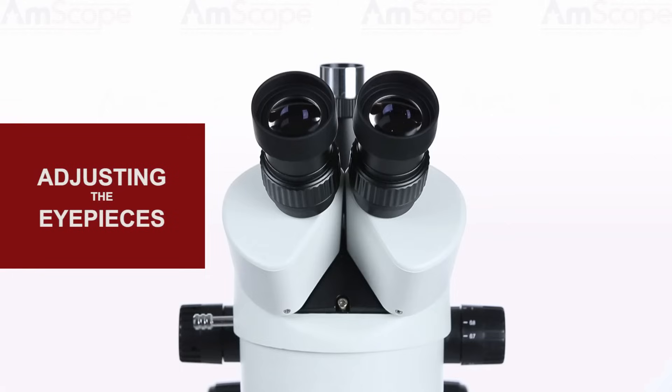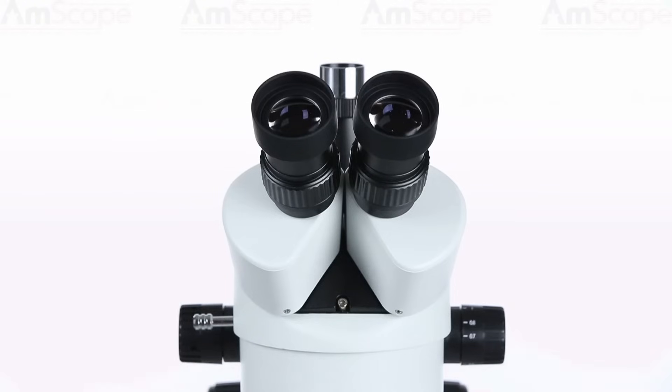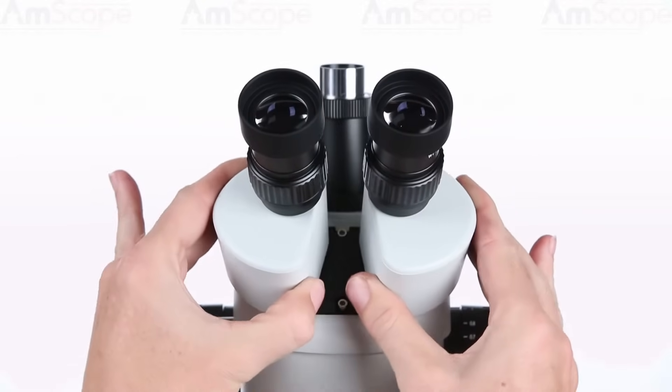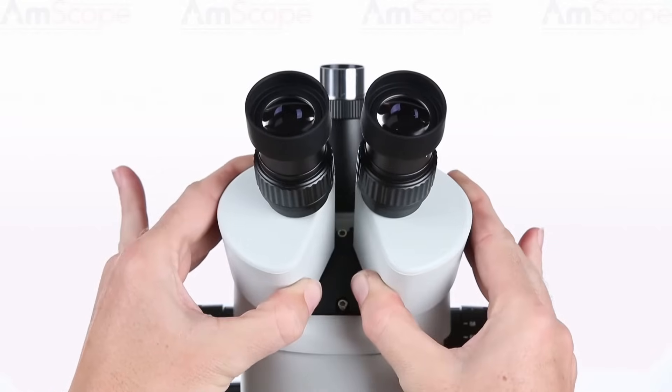To adjust the distance between the eyepieces, simply take hold of each interpupillary adjuster and gently pull them apart. While looking through the eyepieces, find a position that offers a comfortable field of view.